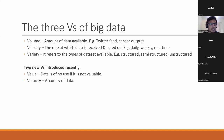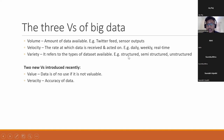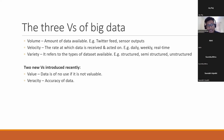You have to understand what is the velocity of your data — based on that, you will choose your framework. Then variety — again, there are three kinds of data: structured, semi-structured, and unstructured. Based on this data variety, you will choose which framework and which kind of storage to use to save your data.